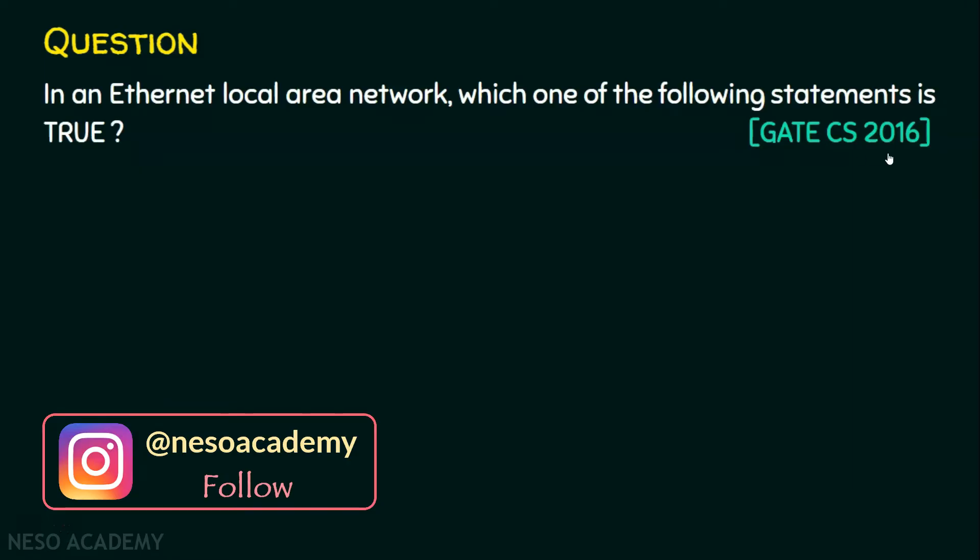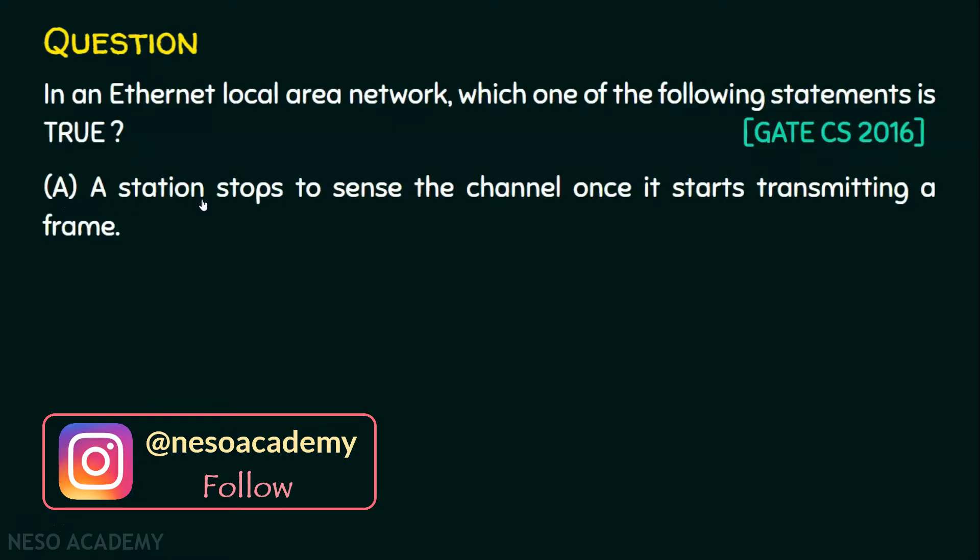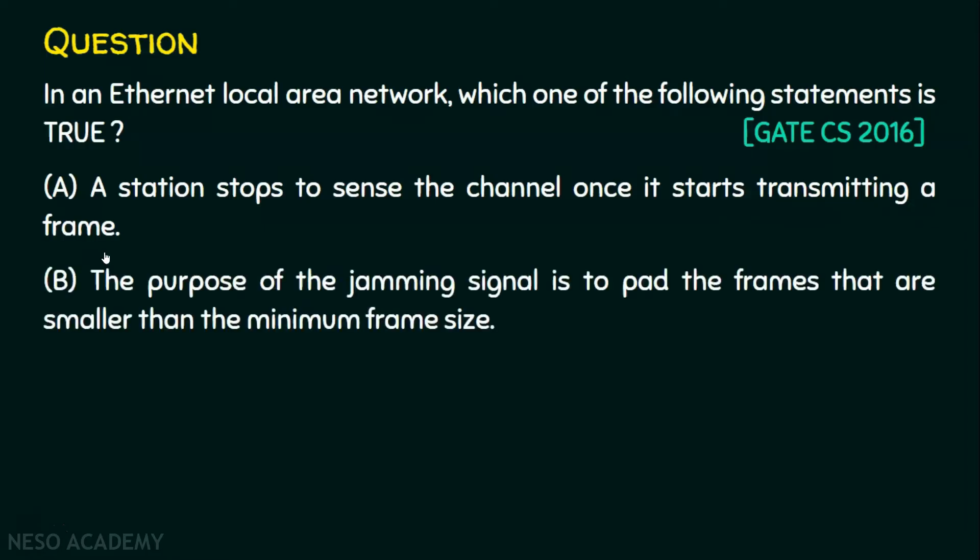And options are given. Option A: A station stops to sense the channel once it starts transmitting a frame. Option B: The purpose of jamming signal is to pad the frames that are smaller than the minimum frame size.